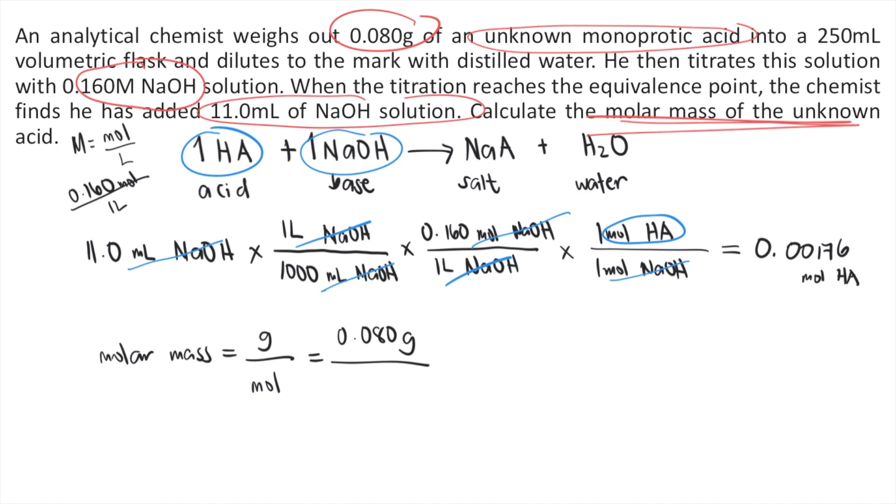How many moles of acid are there? We solved this: 0.00176 moles. So 0.080 divided by 0.00176 equals approximately 45 grams per mole. Or in three significant figures, that's 45.5 grams per mole. These are the answers to the question.